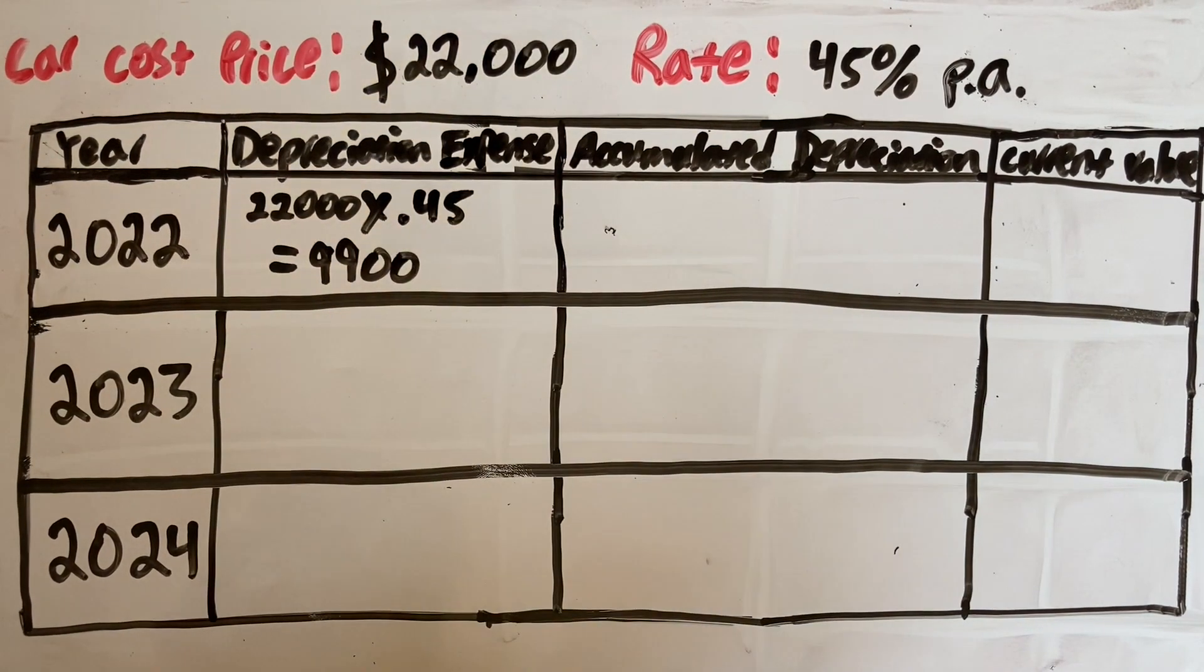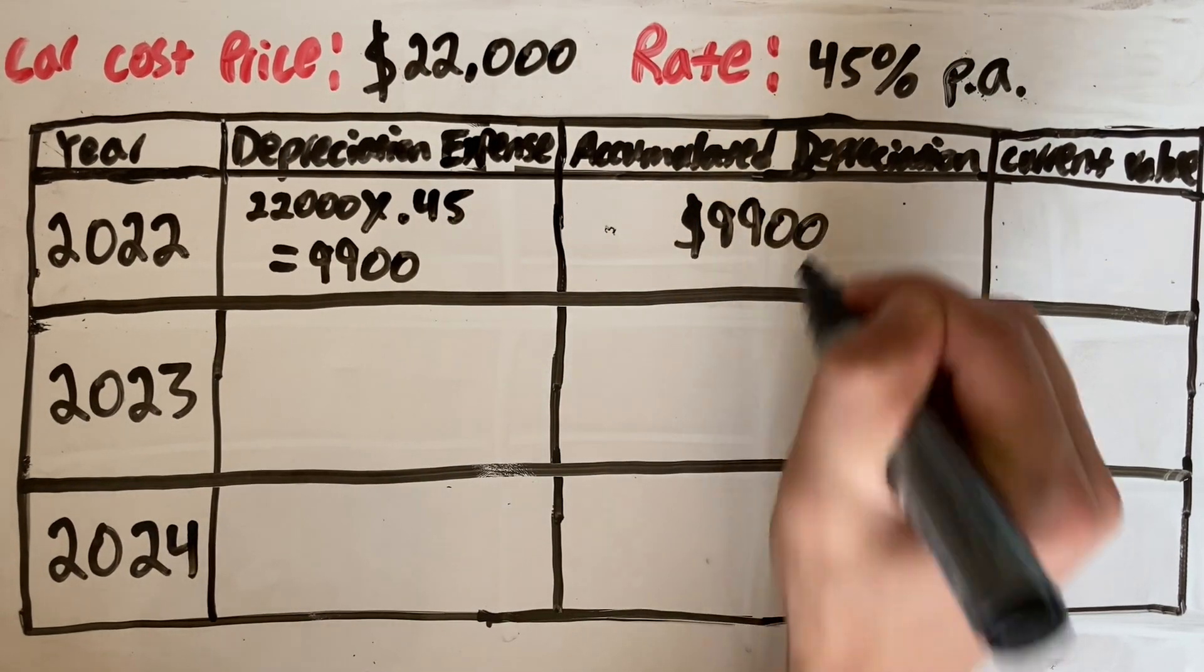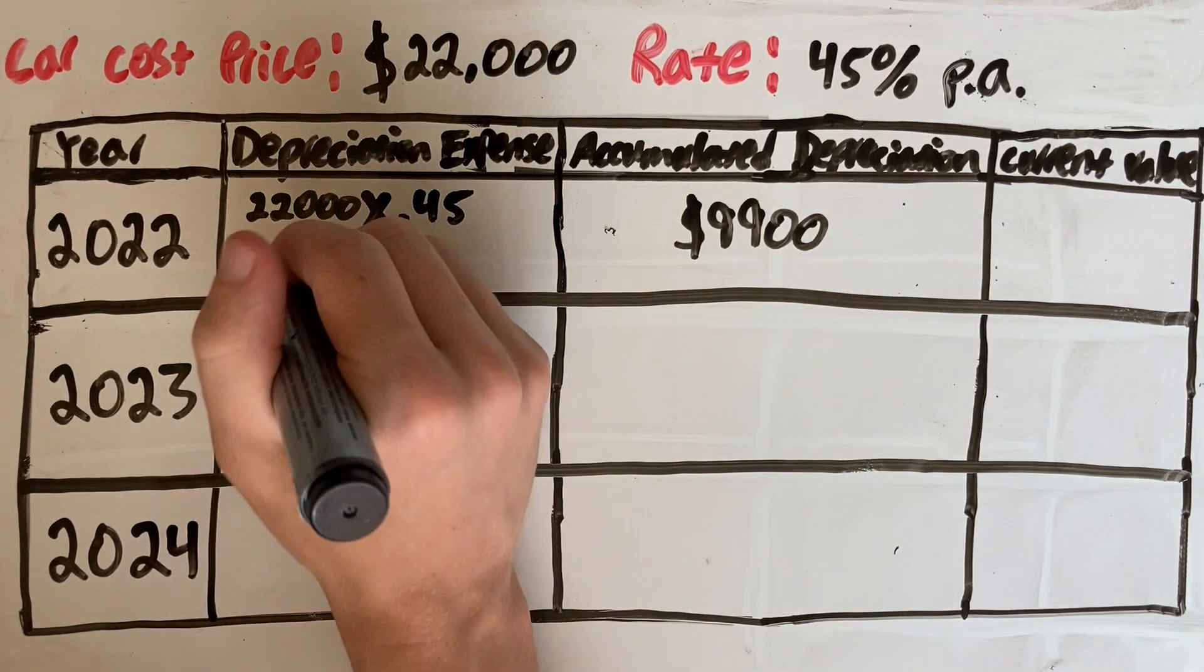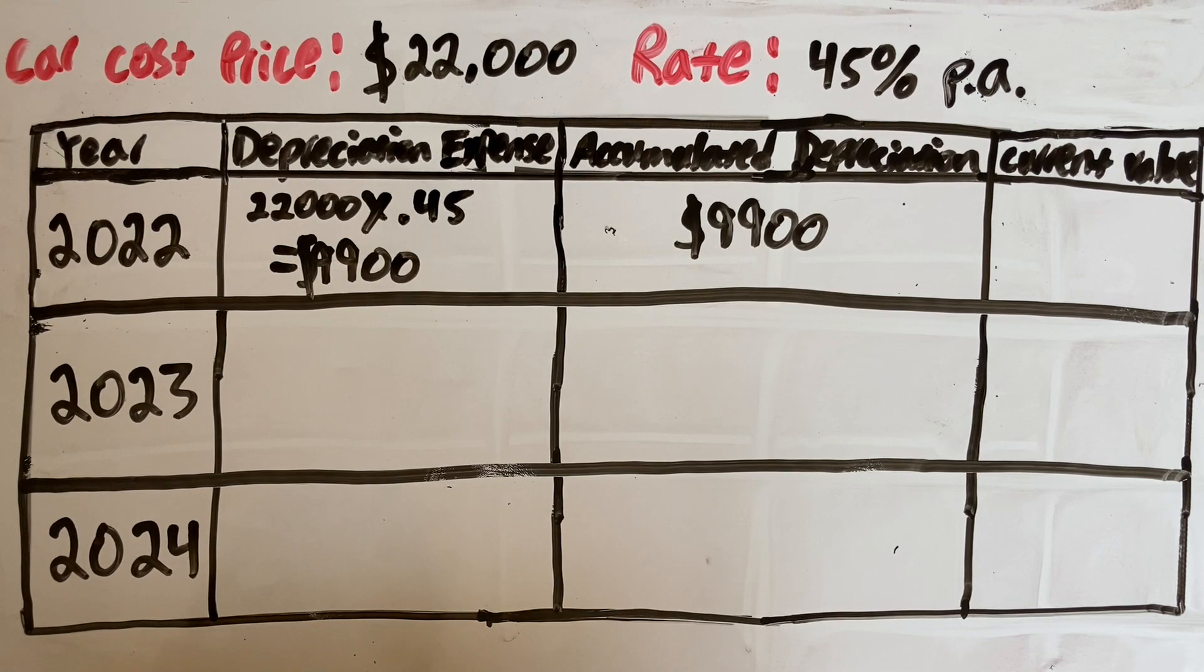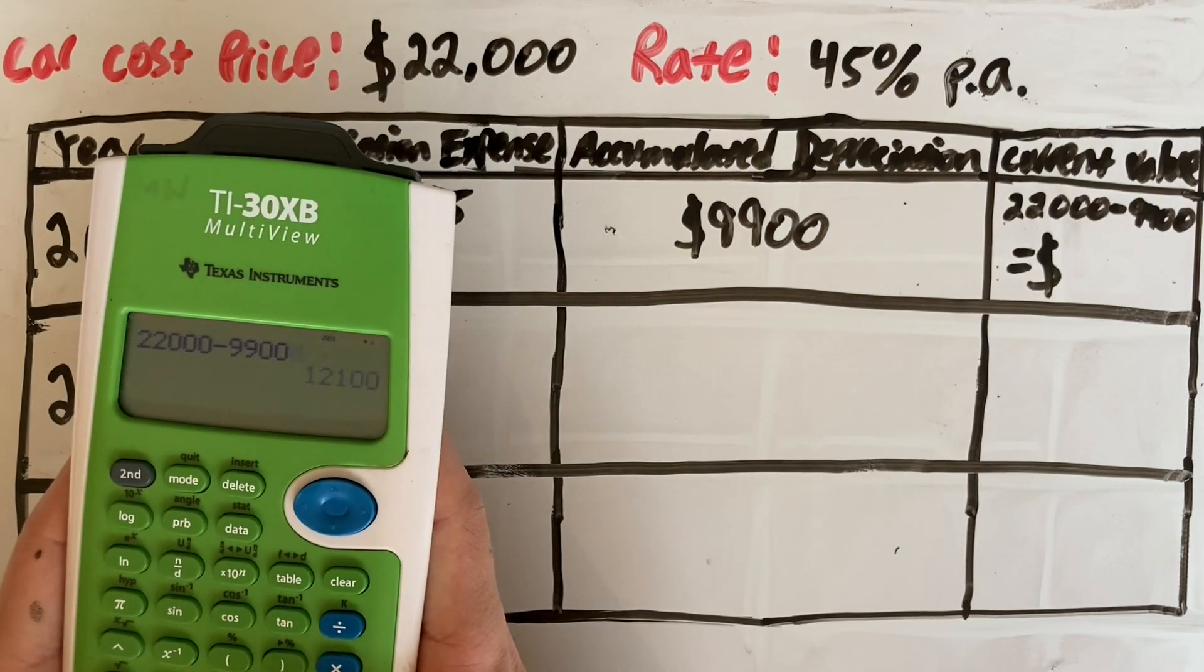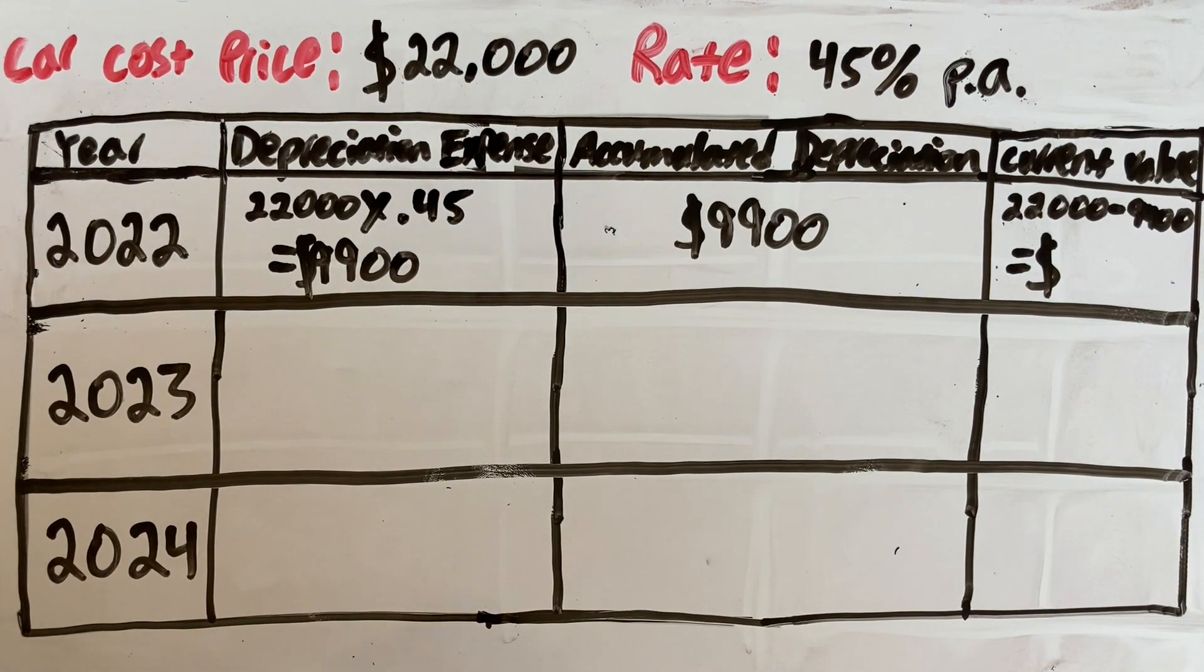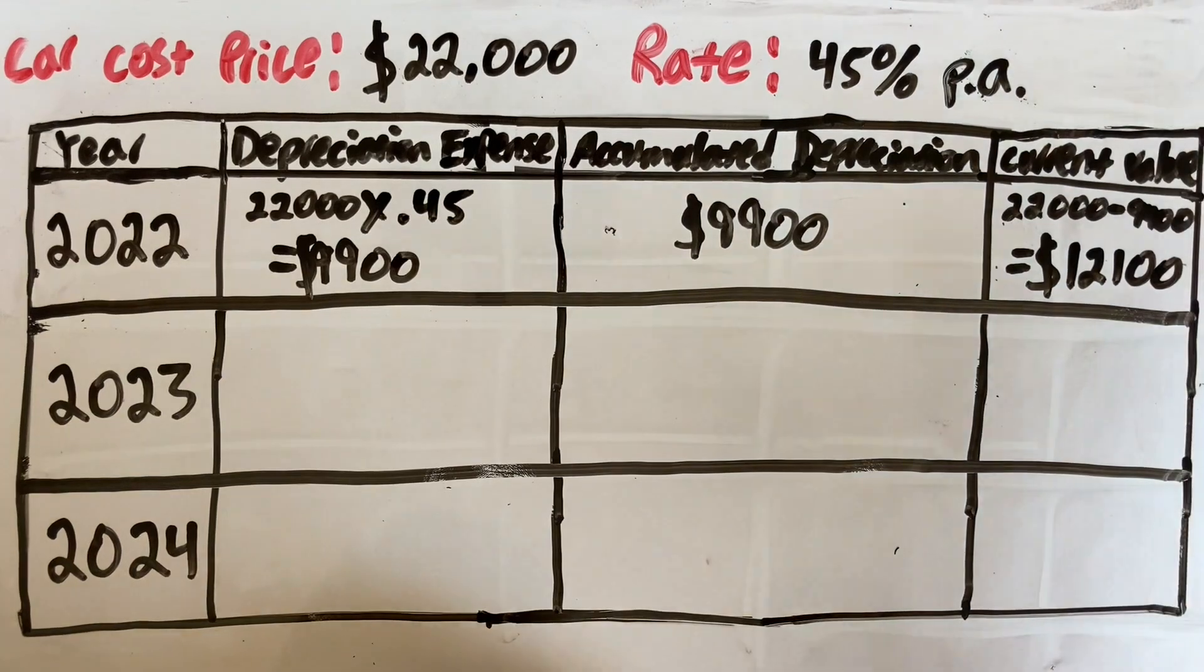That means the accumulated depreciation so far is $9,900 because this is the only year we've depreciated it so far. So now we can find our current value at the end of 2022. What's the value after this depreciation? We find that by taking our original cost which is $22,000 and subtracting our accumulated depreciation which is $9,900. That's going to give us $12,100 as its current value at the end of 2022.